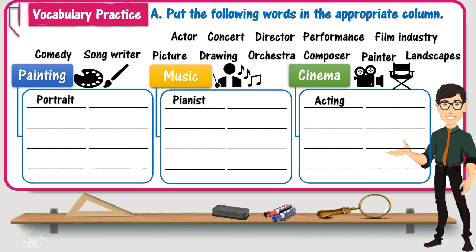Actor — someone who acts in a movie or a play — so definitely related to cinema. The next word is concert, usually when a singer sings in public, so definitely related to music. Director — a person who directs a movie. In Morocco we have examples like Dressa al-Rouk, Kamal Kamal, Jamal Benjadoub, and internationally Steven Spielberg, James Cameron, etc. So we're talking about a word related to cinema.